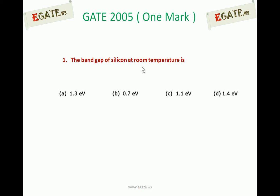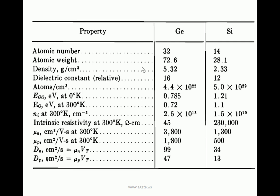The band gap is also called the energy gap of silicon. At room temperature, the energy gap of silicon is 1.1 electron volts, so the correct answer is (c). We must remember some properties of silicon and germanium, as questions may be asked on these properties.